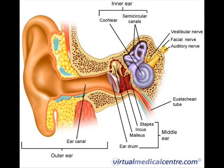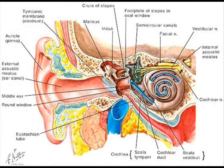The outer ear consists of the visible portion called the auricle or pinna, which projects from the side of the head, and the short internal auditory canal, the inner end of which is closed by the tympanic membrane, commonly called the eardrum. The function of the outer ear is to collect sound waves and guide them to the tympanic membrane.